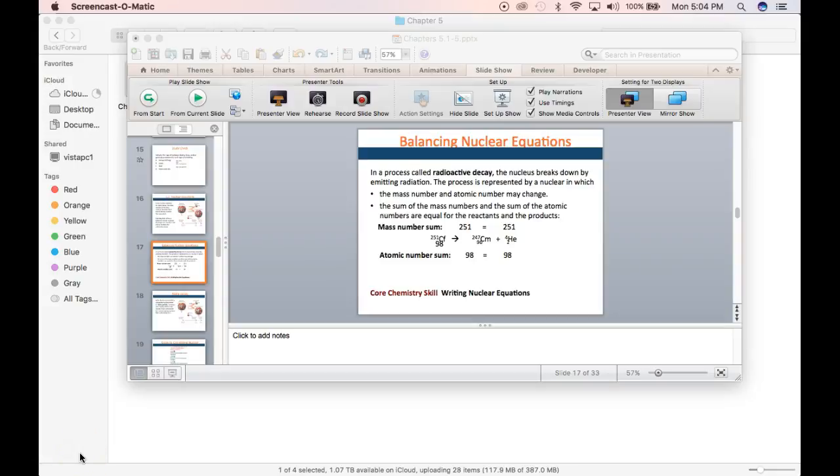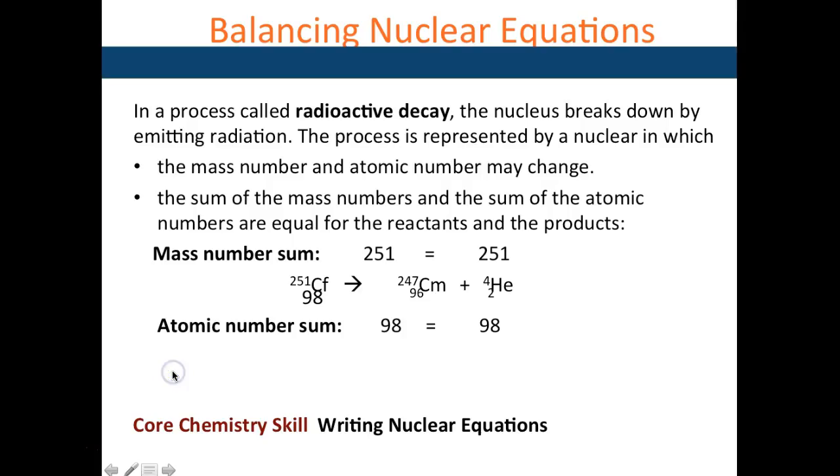In this video, continuing with section 5.2 of chapter 5, we'll cover how to balance nuclear equations. Make sure that the mass numbers on both sides are equal - so 247 plus 4 equals 251, which matches the 251 on the left side. Then make sure the atomic numbers are also equal - so 96 plus 2 equals 98, and it's 98 here on the left side.